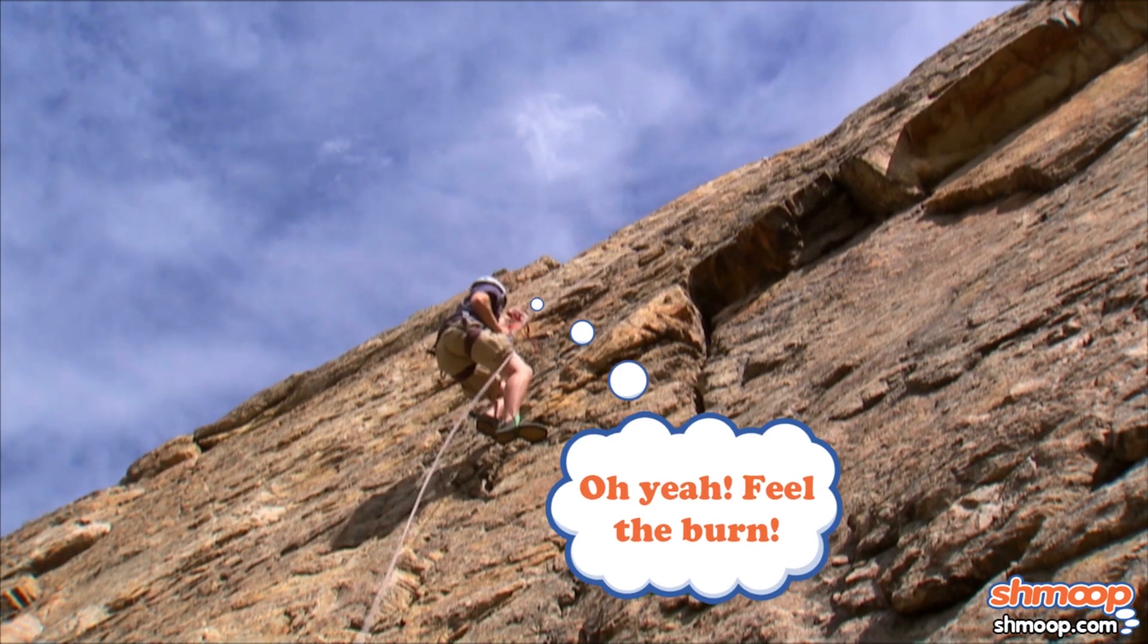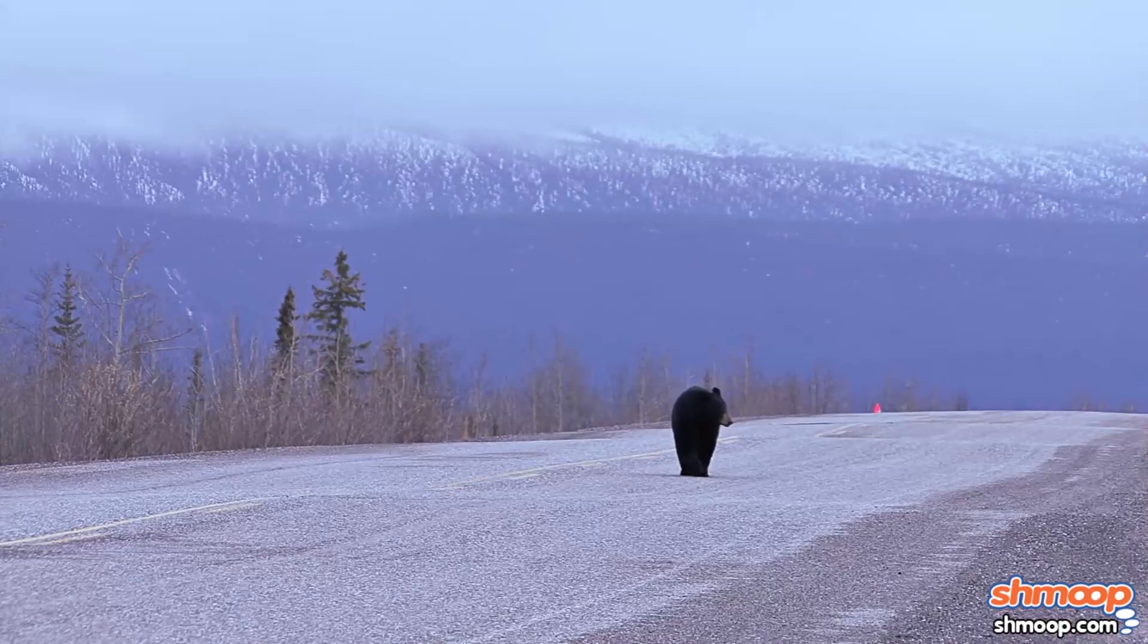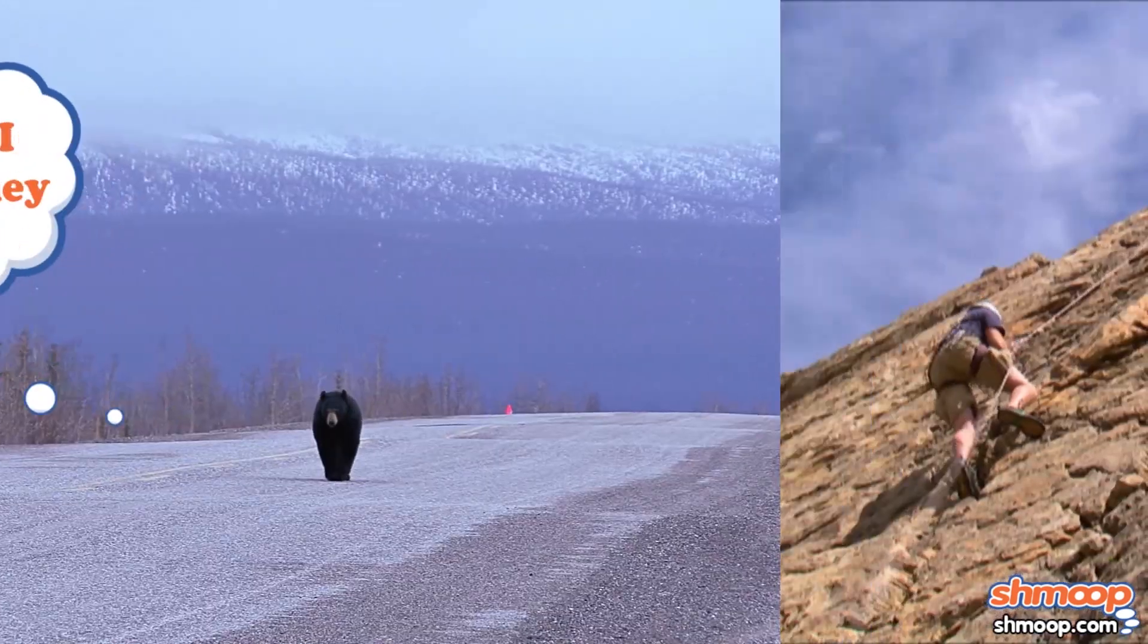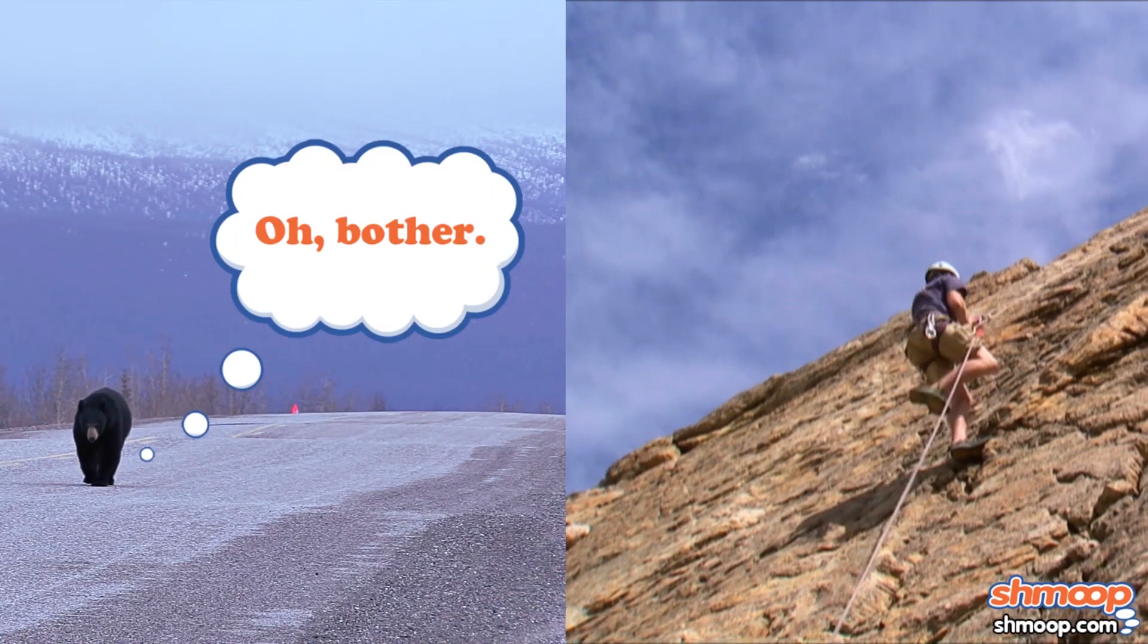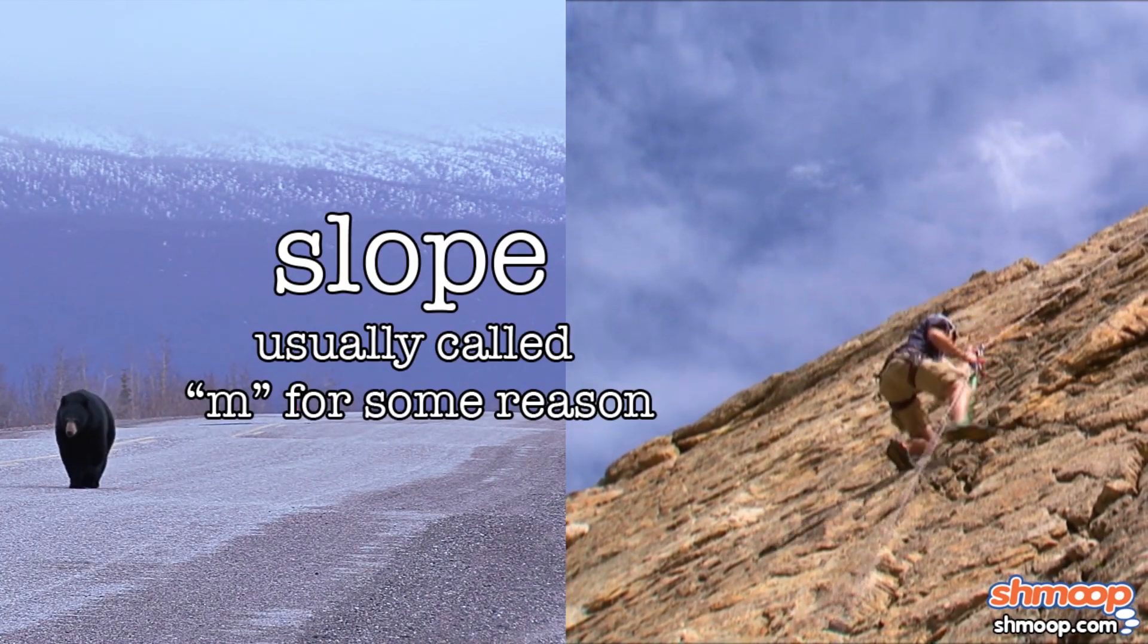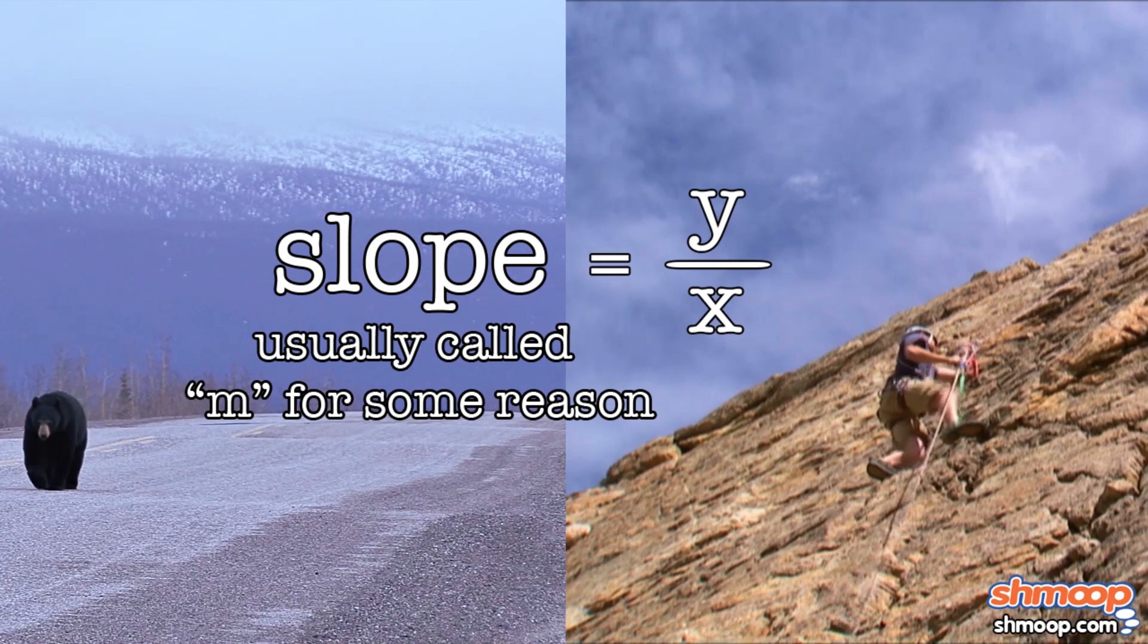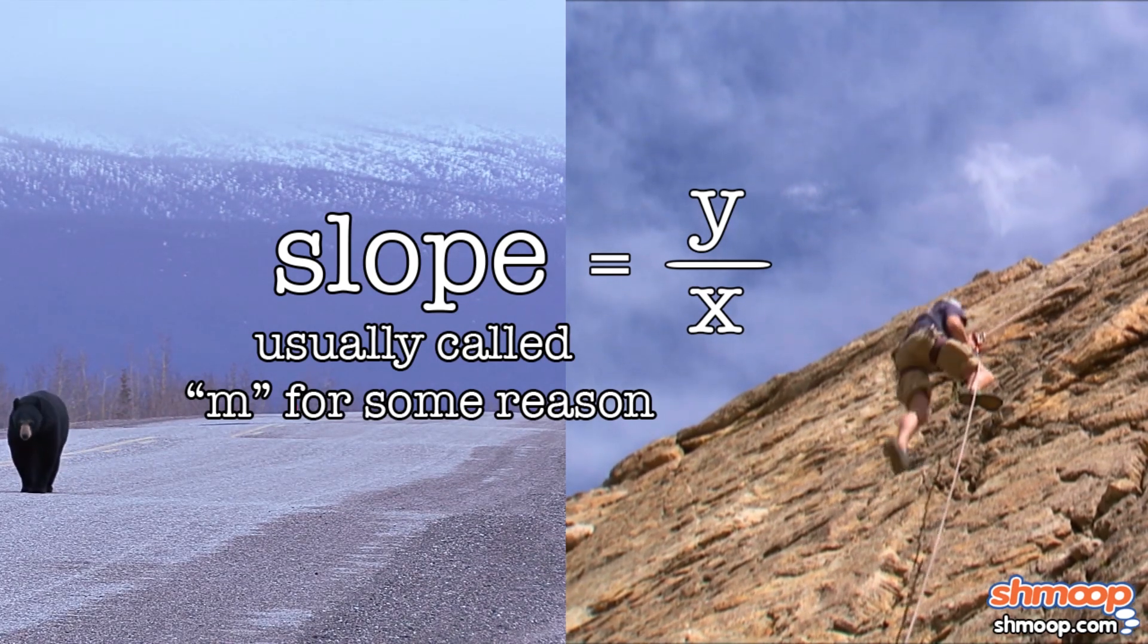The slope of a line is just about how steep, or flat, it is. And there's a number associated with that steepness, or flatness, called slope. While it's usually calculated as a fraction of y over x, or in fancy pants math terms, it looks like this.